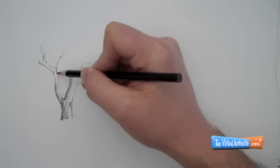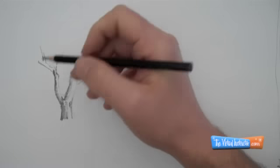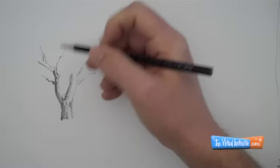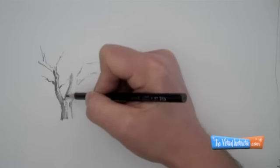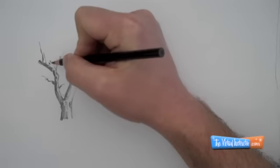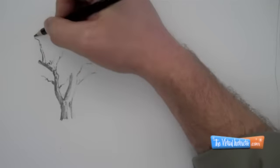A common mistake I see people make when they're drawing trees is they make the branches not very organic. And what I mean by that is they don't let the lines kind of free flow out like a tree grows. So be free with your branches when you draw.